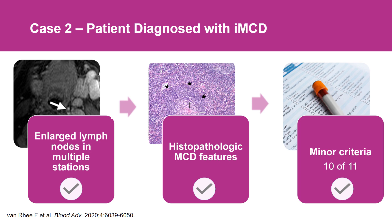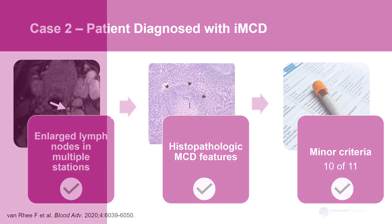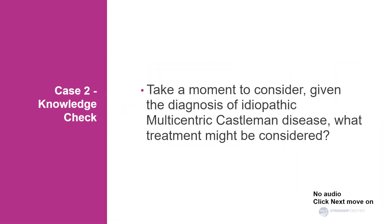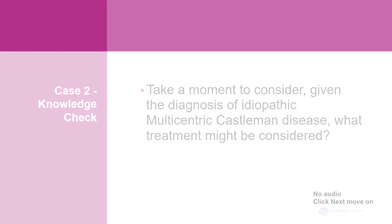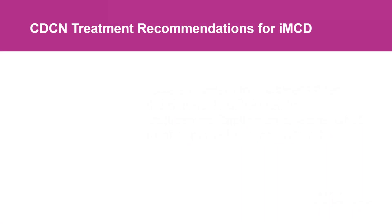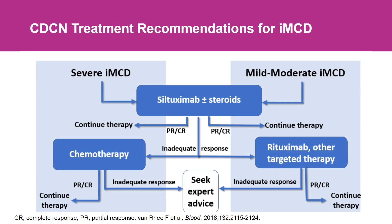Based on the acute and severe presentation, along with severe thrombocytopenia, this patient would be considered to have the idiopathic multicentric Castleman disease TAFRO subtype, which is by far the most severe. Now that the diagnosis is made, the patient should be immediately started on anti-IL-6 therapy with siltuximab. Given the severity, concomitant high-dose corticosteroids should also be given along with siltuximab, and daily monitoring is essential to ensure no progressive organ dysfunction. If needed, accelerated weekly dosing of siltuximab should be given instead of the typical every-three-week dosing.